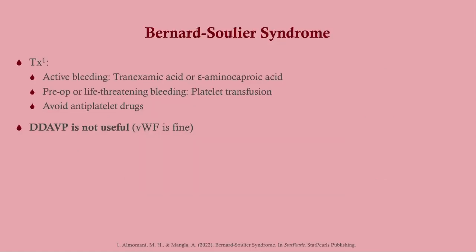Treatment for Bernard-Soulier syndrome: for active bleeding, use tranexamic acid or aminocaproic acid — these are the go-to therapies. DDAVP will not work here because it helps release Von Willebrand factor, which is not the problem. For life-threatening bleeding, transfuse platelets — those transfused platelets will have functional GP1b. Of course, avoid antiplatelet drugs.